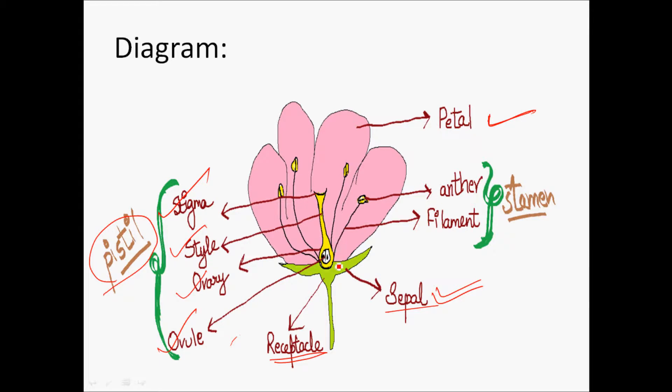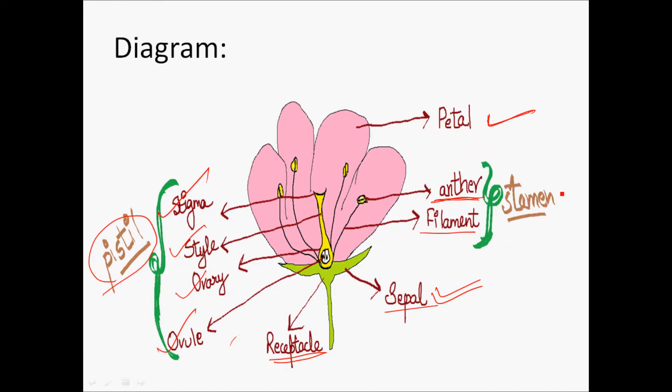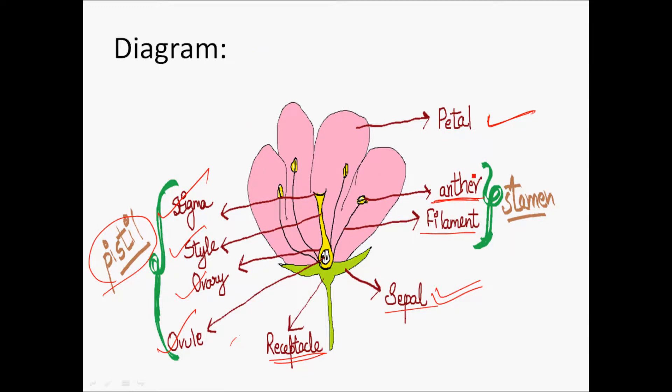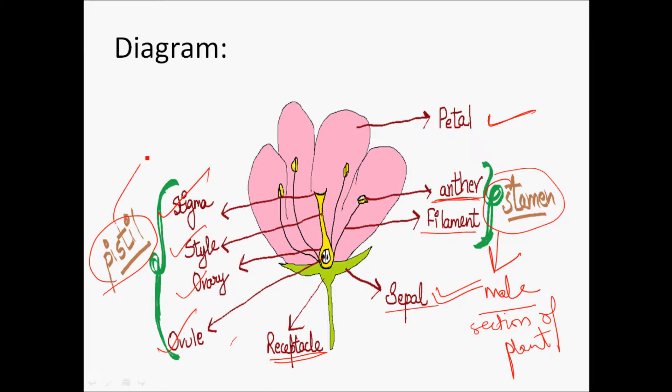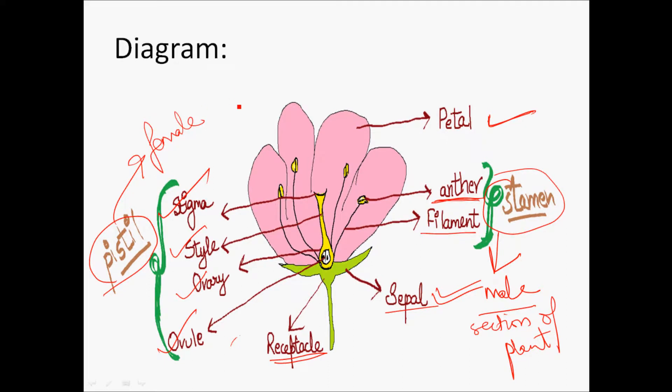On the other side, there are some fibrous-like growths from the base of the ovary. The fibrous stem is known as filament and the top contains anther which has pollen grains. Anther and filament together are known as stamen. Stamen is also known as the male reproductive system, the male section of the plant, and pistil is known as the female part of the plant.